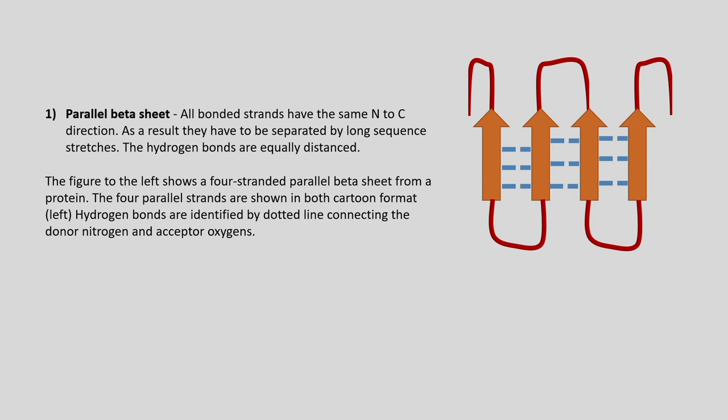Beta sheets may be arranged in different orientations. In parallel beta sheets, all strands have the same end-to-end direction and as a result have to be separated by long sequence stretches, with equally distanced hydrogen bonds. In the figure you can see a four-stranded parallel beta sheet from a protein shown in cartoon format, with hydrogen bonds identified by dotted lines connecting donor nitrogen and acceptor oxygen atoms.